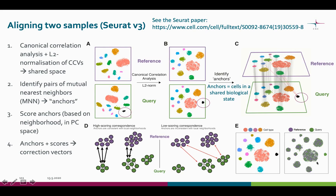The information of which sample the cell originally came from is naturally stored, as well as the meaningful biological variance. The attempt here is to remove just the batch effect and make the comparison between the samples possible.